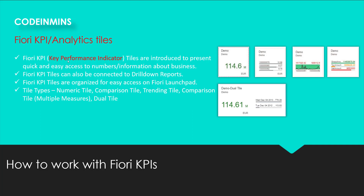KPI stands for key performance indicator. These tiles are introduced to present quick and easy access to numbers or information about the business. There are different kinds of tiles which can be created, and these tiles can also have a drill-down report. When you click on any tile you have created, you can show detailed information or a detailed report. These tiles are organized onto the Fiori launchpad using spaces and pages concept.